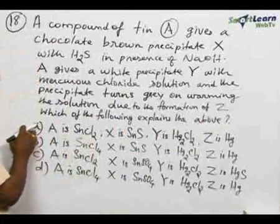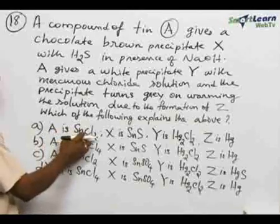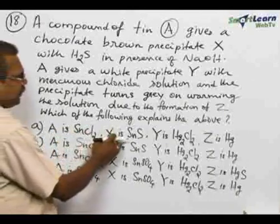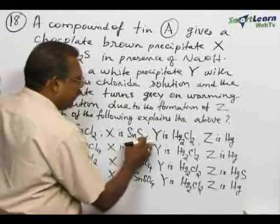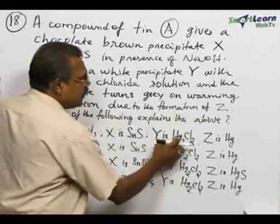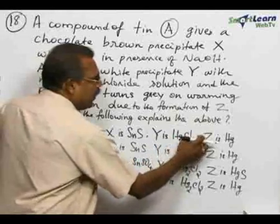Here option A, A is SnCl2 stannous chloride and X is SnS sulphide, Y is Hg2Cl2 that is calomel and Z is mercury.